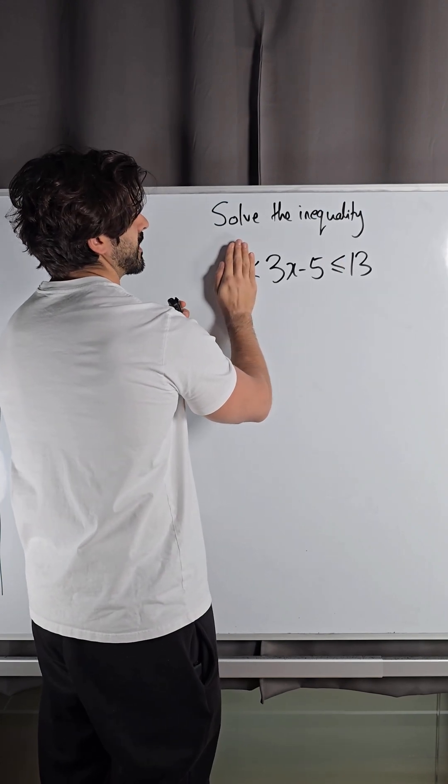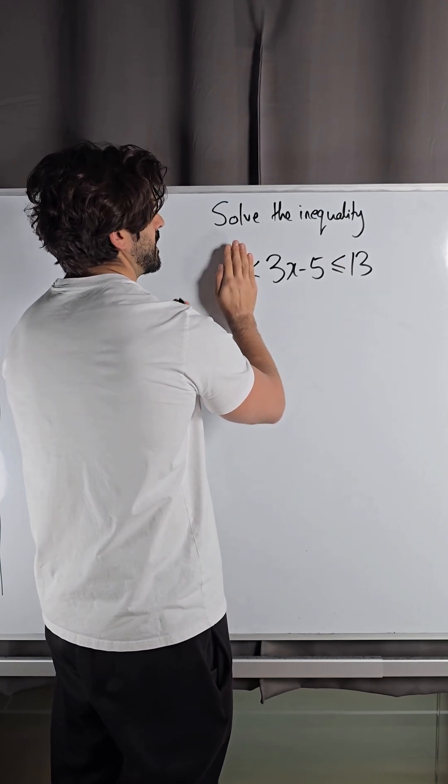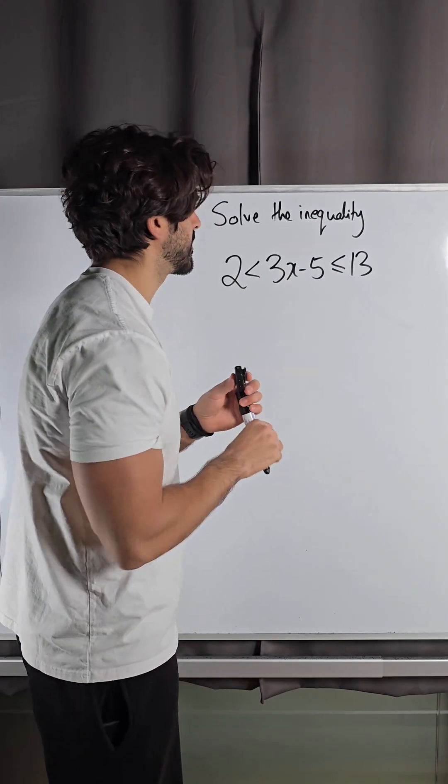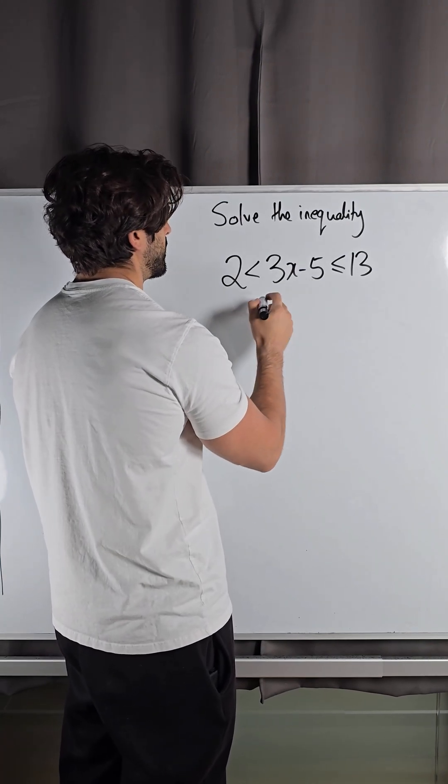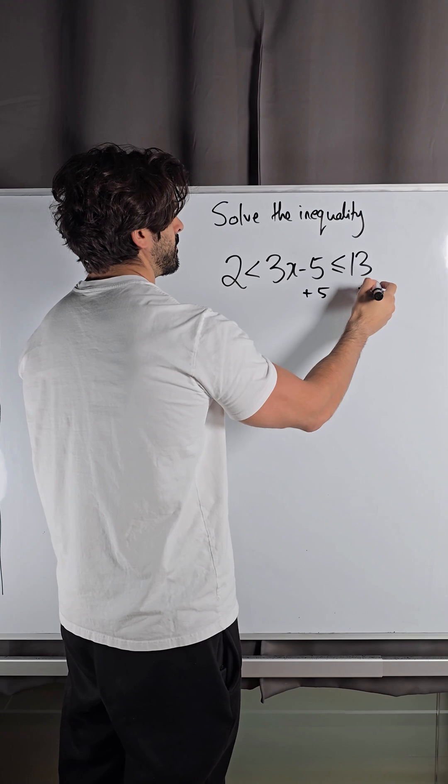If it's the same on both sides guys, you can keep it the same in this form and just add 5 and divide by 3. You don't need to do it separately.